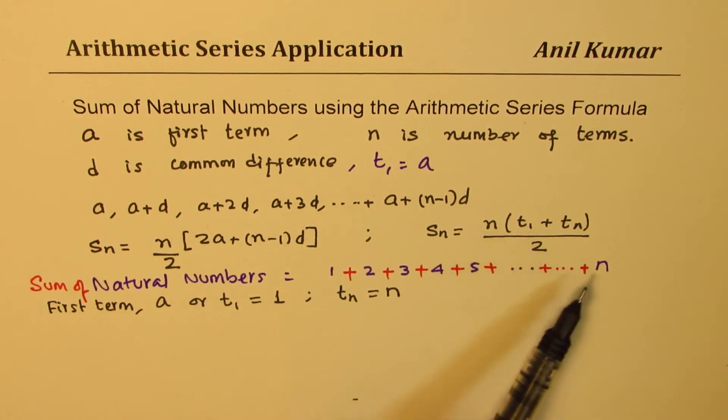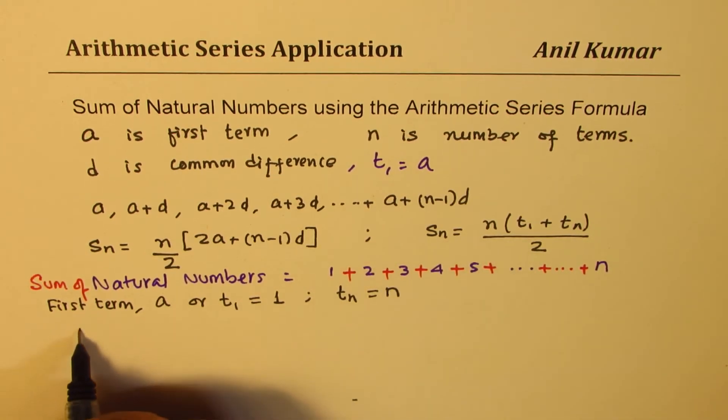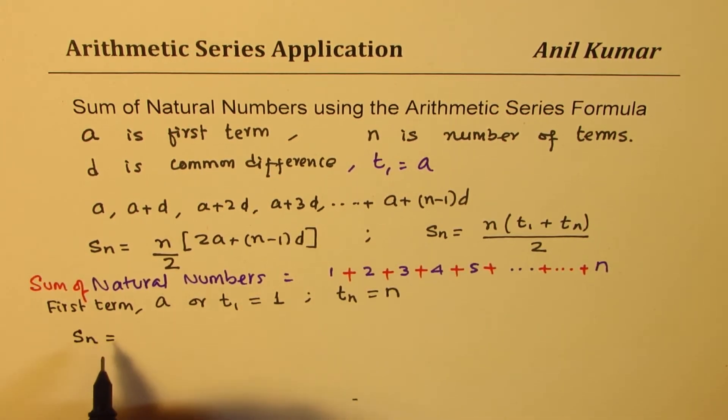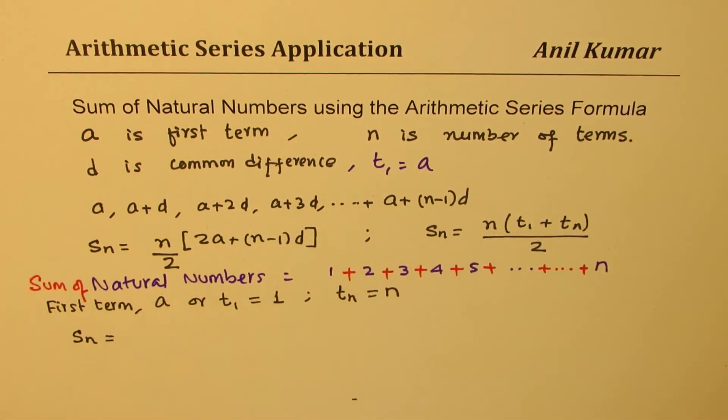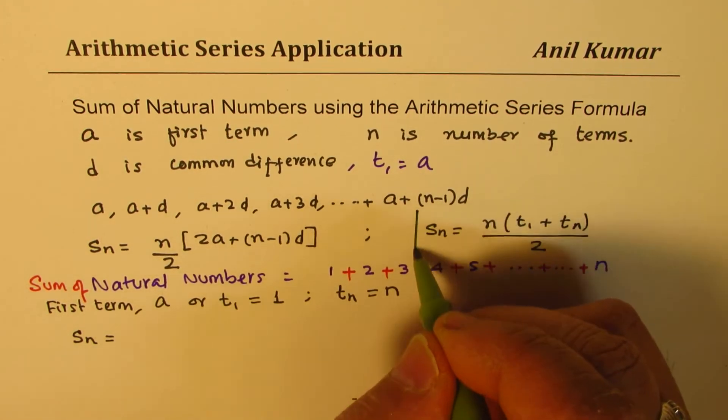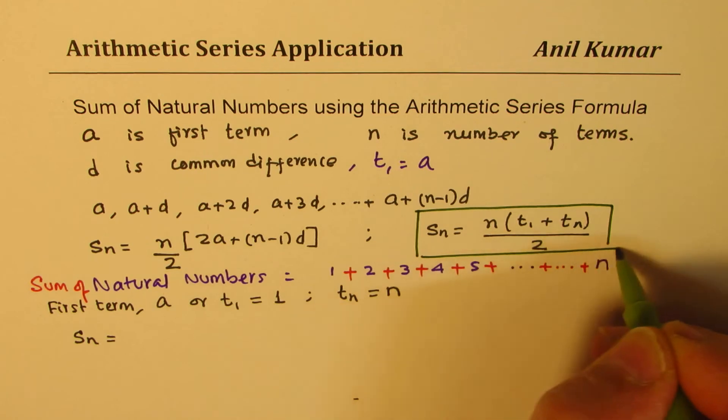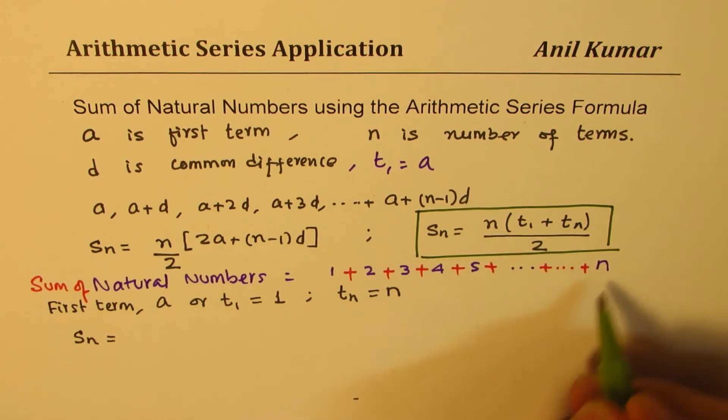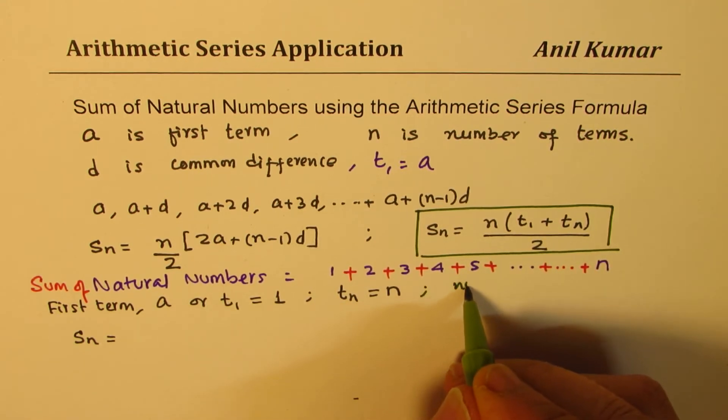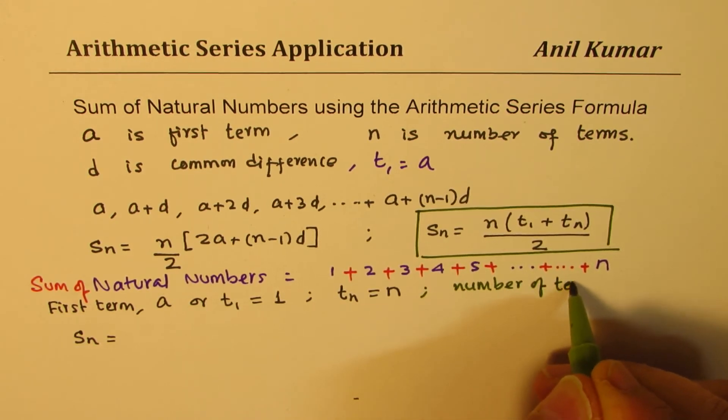So what becomes the formula now? We could write sum of n terms, that is sum of natural numbers, is equal to, we'll use this particular formula here, which says number of terms are also n. So Tn, the last term is n, and also number of terms is also n.